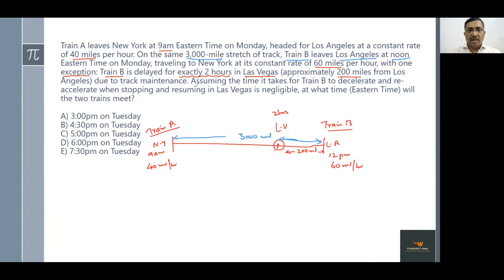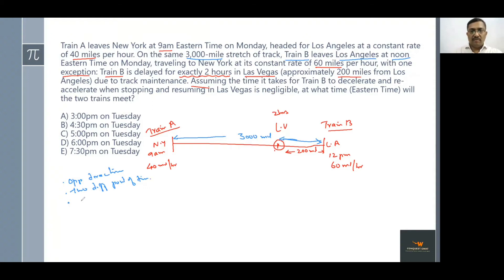The question says: assuming the time for Train B to decelerate and reaccelerate when stopping in Las Vegas is negligible, at what time will the two trains meet? Key things to note: the trains are traveling in opposite directions, they start at two different times, and Train B is delayed by two hours at Las Vegas. These are the things we really need to consider.